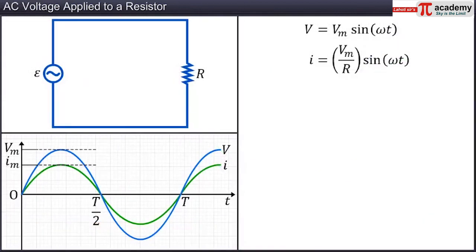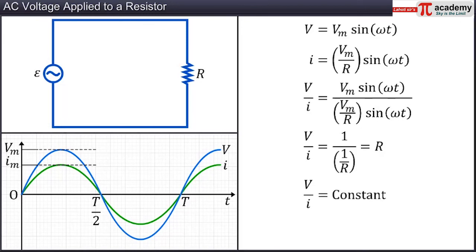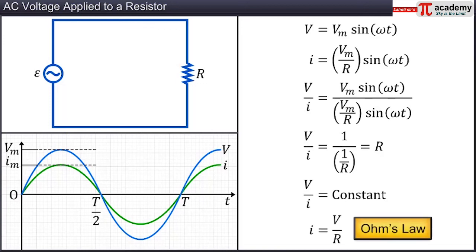The fact that current and voltage are in phase can be seen more clearly if we divide the instantaneous voltage V by the instantaneous current I. The ratio of instantaneous voltage V to instantaneous current I is a constant of magnitude R. This means the ratio of voltage to current is constant, and hence Ohm's law is valid in the case of resistances connected in a circuit with an AC voltage source.